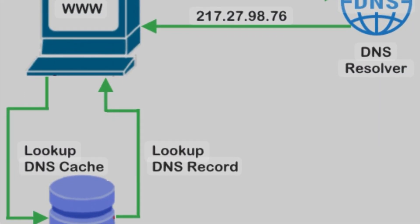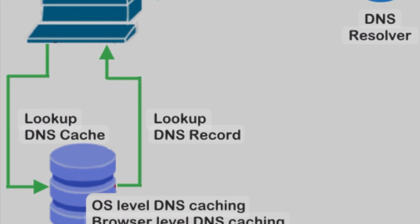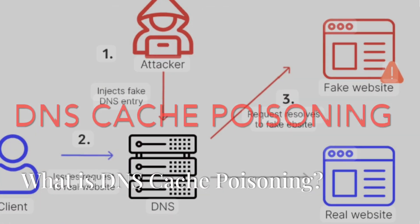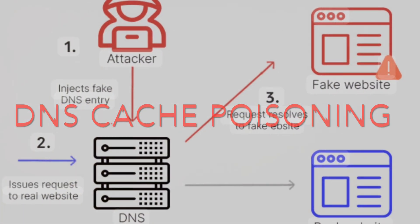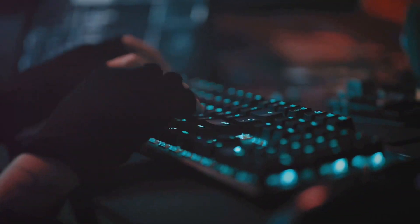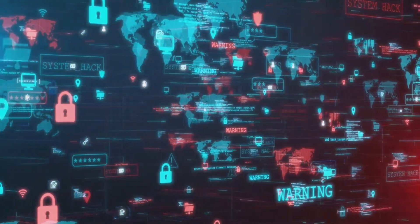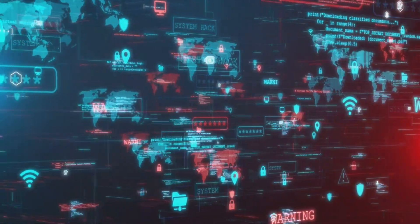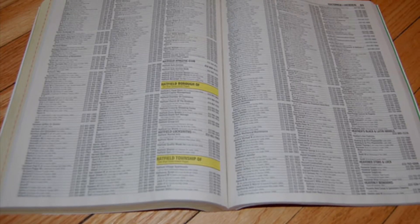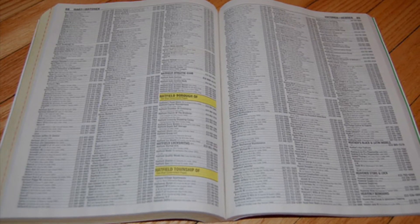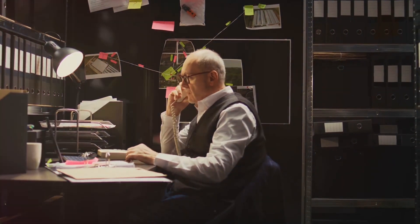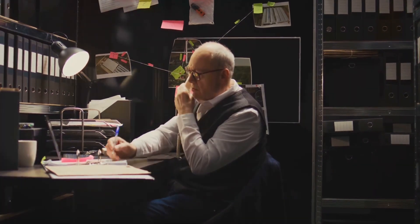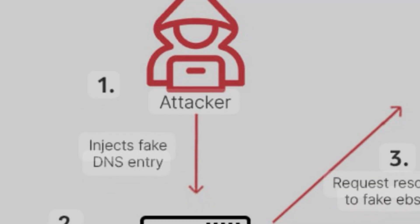DNS cache stores these mappings temporarily to save time for future visits. DNS cache poisoning, also known as DNS spoofing, involves attackers inserting false information into a DNS cache so that DNS queries return incorrect responses, directing users to malicious sites instead of their intended destinations without them knowing. Imagine looking up your friend in a phone book, but instead of your friend's number, it shows the number of a scammer pretending to be your friend — this is essentially what happens in a DNS cache poisoning attack.